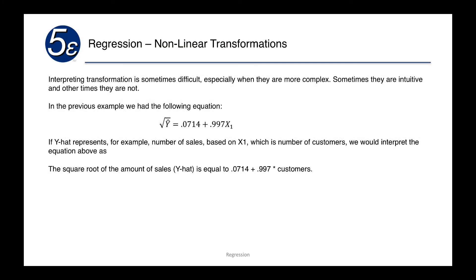Since y hat represents, for example, number of sales based on x₁, which is the number of customers, we would interpret the equation above as the square root of sales is equal to 0.0714 plus 0.997 times the x₁ customers. So if we had obtained a value of 10, we would square that and get the value of 100 because it would have been the predicted value as being the square root.